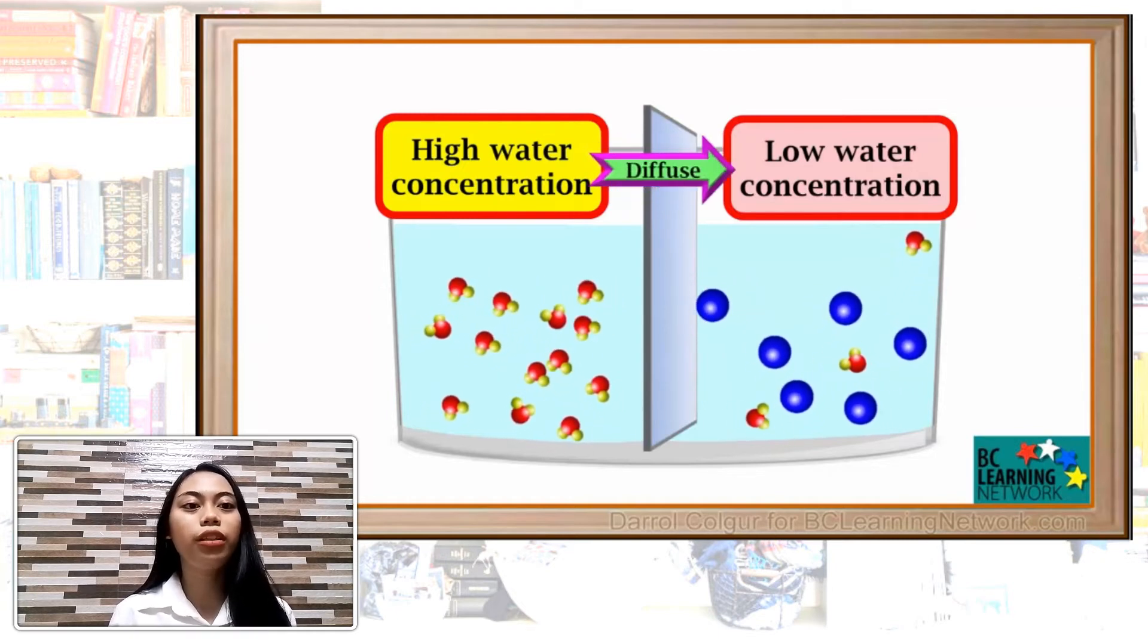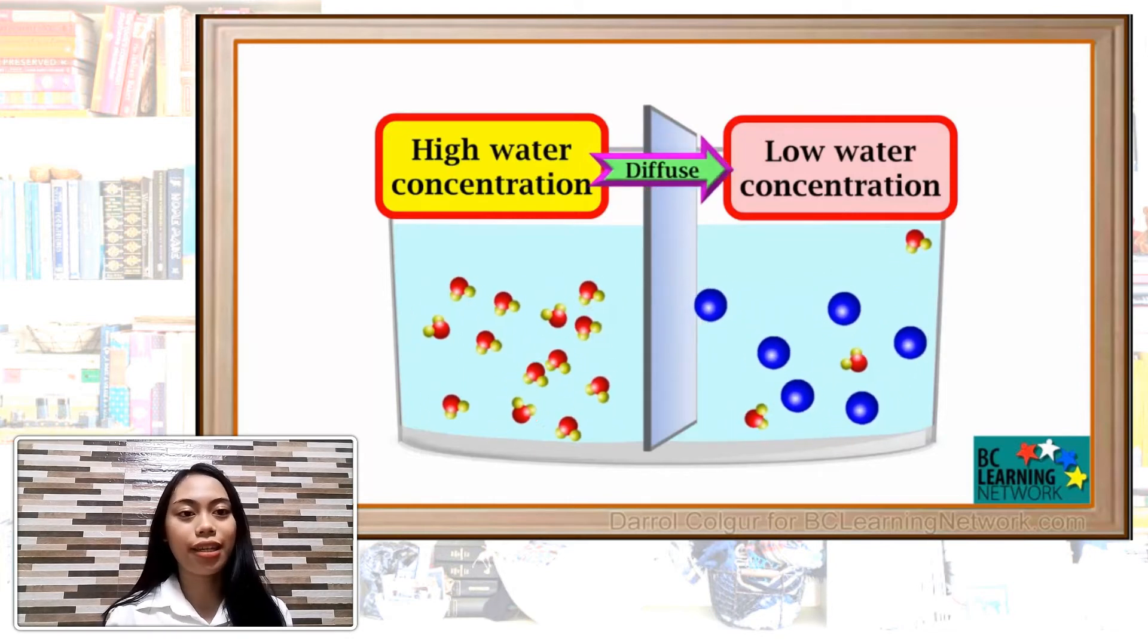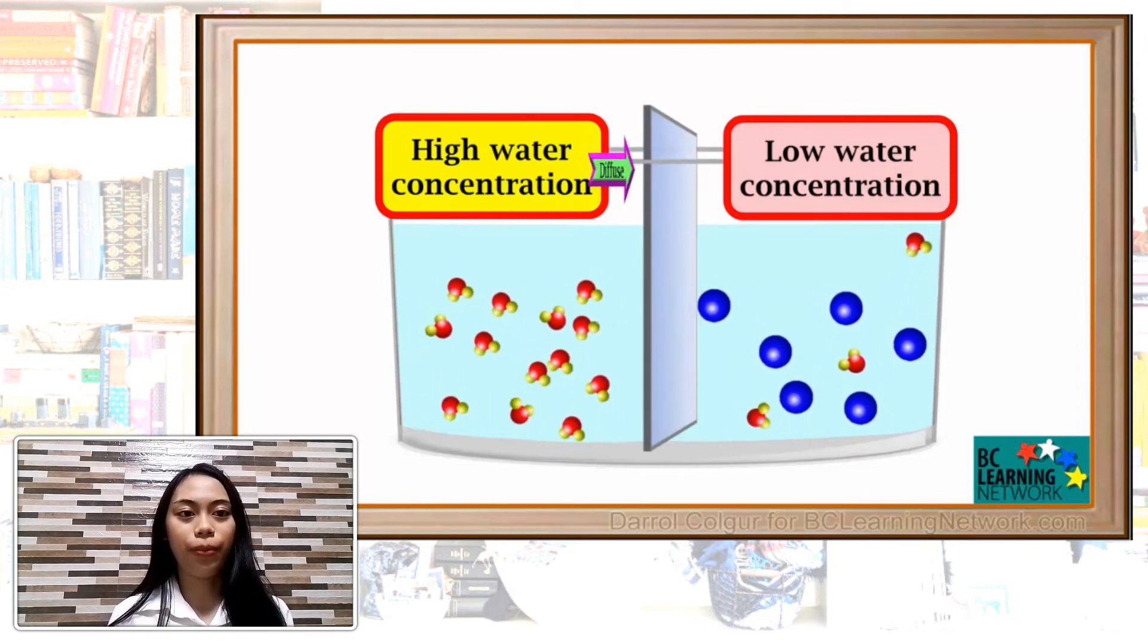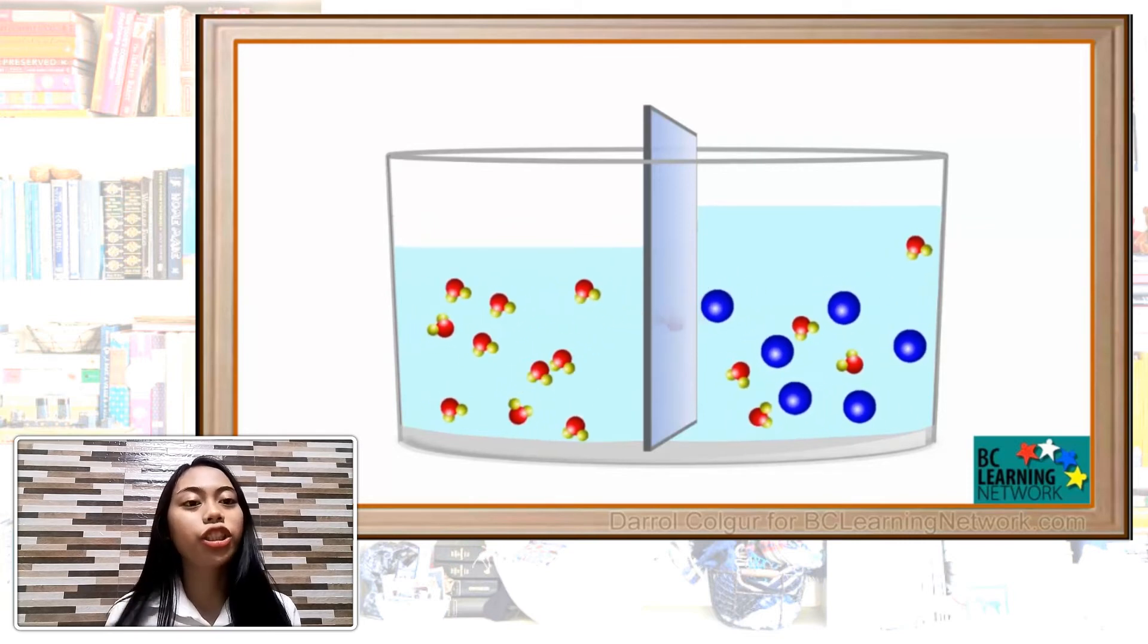Water molecules are small enough to pass through this barrier. And, we know that water will diffuse through a barrier from an area of high concentration to an area of lower concentration. So, in this case, it will diffuse toward the right chamber. As the water moves into the right chamber, the volume in the right chamber increases, while the volume in the left chamber decreases.